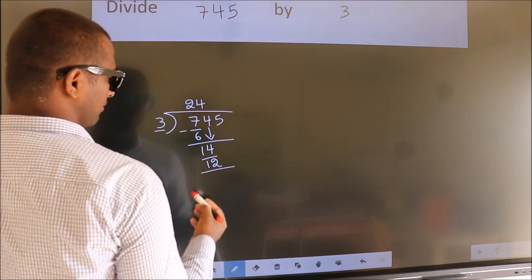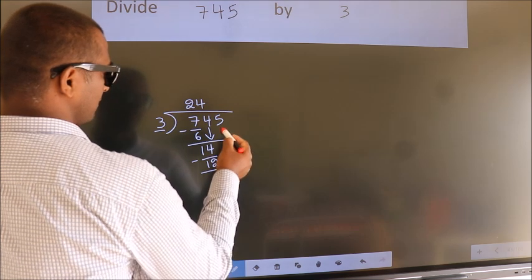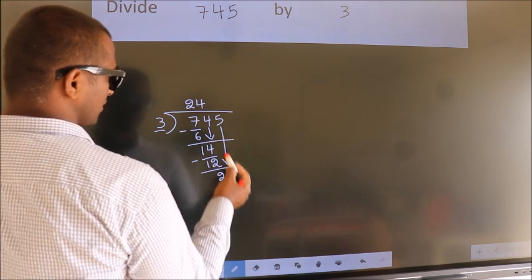Now we subtract. We get 2. After this, bring down the beside number. So 5 down.